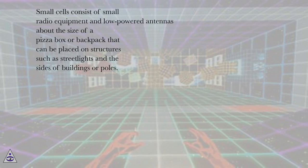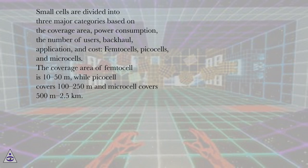Small cells consist of small radio equipment and low-powered antennas about the size of a pizza box or backpack that can be placed on structures such as streetlights and the sides of buildings or poles. Small cells are divided into three major categories based on the coverage area, power consumption, the number of users, backhaul, application, and cost: femtocells, picocells, and microcells.